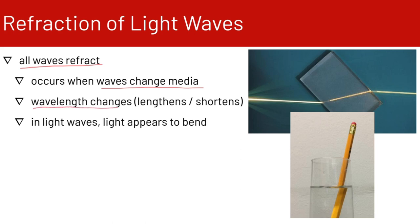The wavelength changes when a wave goes from one medium to the next — the wavelength either lengthens or shortens depending on what medium the wave is moving from. In light waves, light appears to bend. We have a couple of examples here on the right: a light wave moving from air into a prism, where it bends as it enters and again as it leaves. And then there's the very common sight of a pencil in a glass of water that looks broken in half — a classic example of refraction.